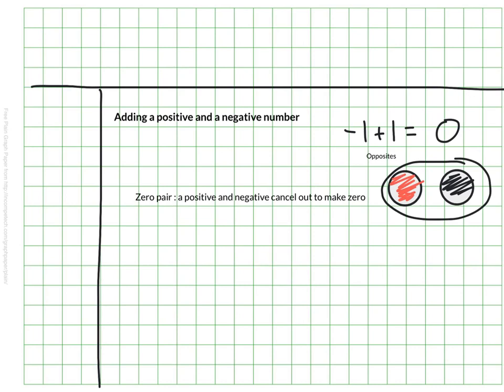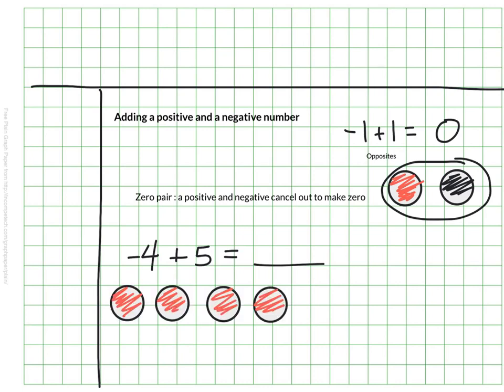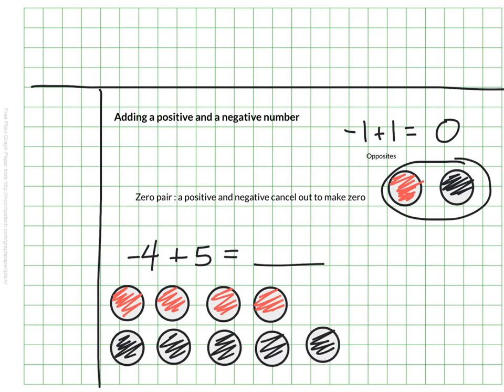This will be a useful thing to remember as we move into higher numbers. So let's try another example. Let's do negative 4 plus 5. And I'm looking at what I need for my chip model. I know I have negative 4, which means I need 4 red chips. And then I'm adding 5 and it's a positive 5, so I'm just adding a positive 5, which means I need 5 black chips.